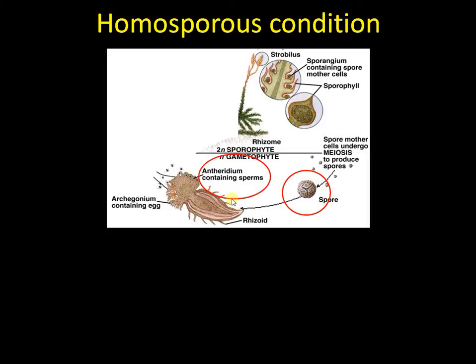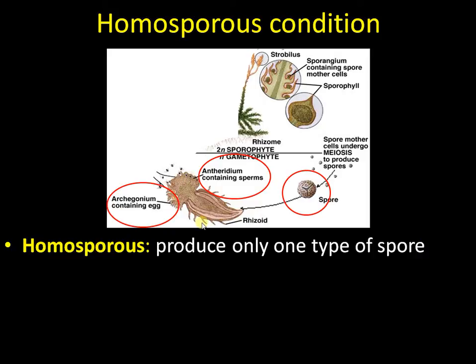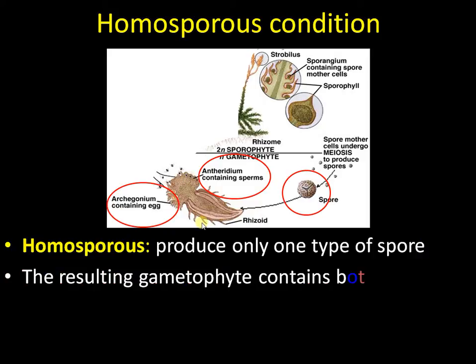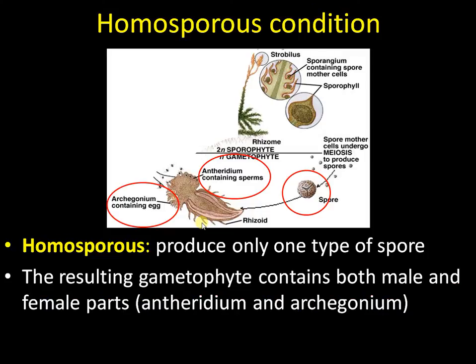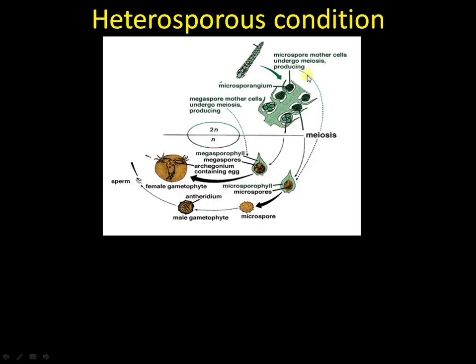The male reproductive structure is called the antheridium and the female reproductive structure is called the archegonium, both present in the same gametophyte. So homosporous plants produce a single type of spore and the gametophyte contains both male and female parts. Examples include Lycopodium and Equisetum.